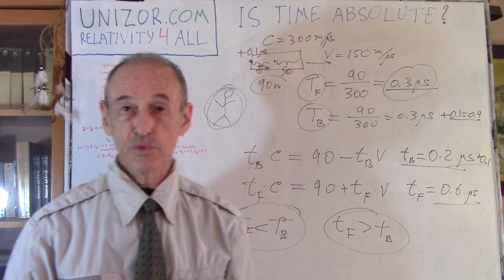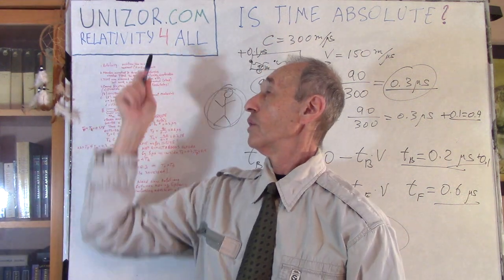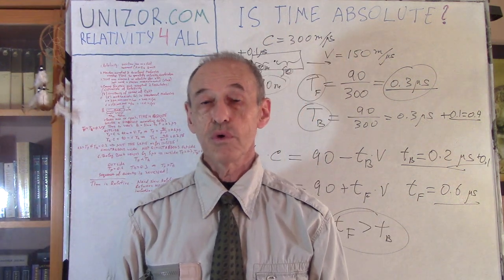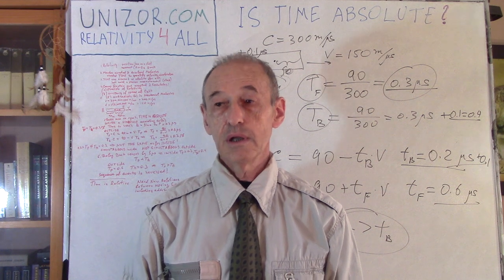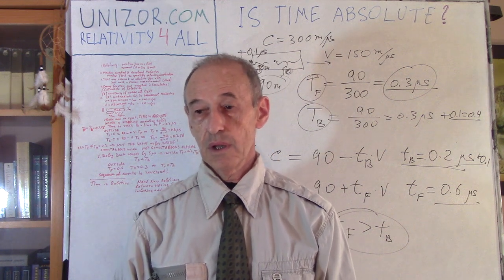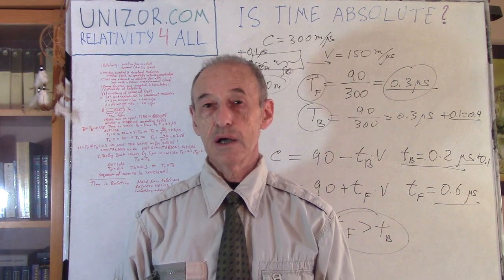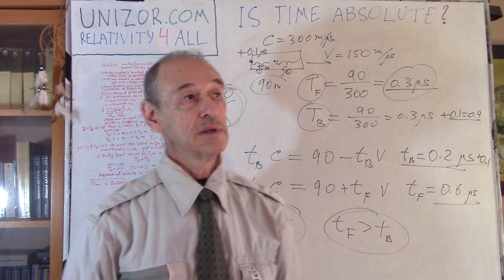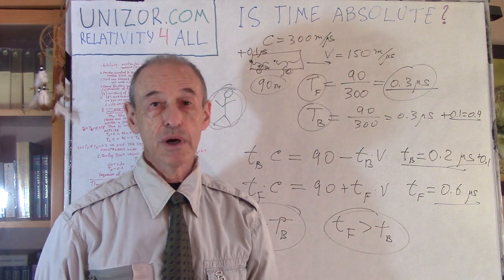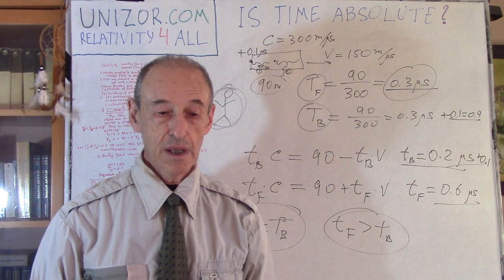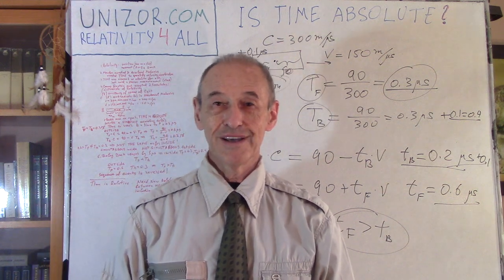So I suggest you to read the notes for this lecture on unizor.com. You choose the course Relativity for All. This is the menu option Einstein's view. And that's where you will find the lecture about absolute time. So thanks very much and good luck.